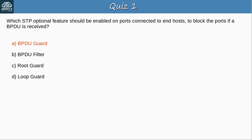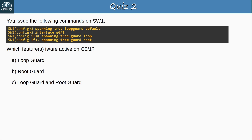Quiz question 2: You issue 'spanning-tree loopguard default' on SW1, then on G0/1: 'spanning-tree guard loop' and 'spanning-tree guard root'. Which feature is active on G0/1? The answer is B, RootGuard. The first command enables LoopGuard on all interfaces including G0/1. Then 'spanning-tree guard loop' enables it directly on the interface. However, the final command 'spanning-tree guard root' overwrites the previous command. Because RootGuard is active, the LoopGuard default does not apply to G0/1. Only one can be active at once, and the interface-specific command takes precedence over the global default.